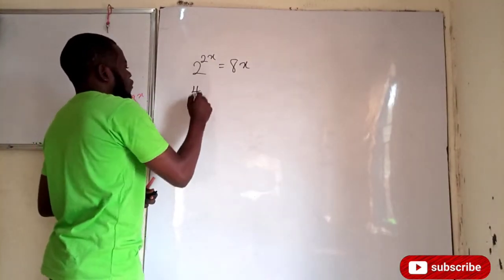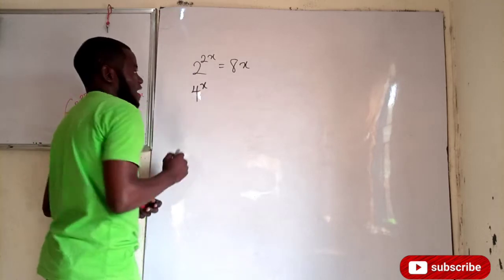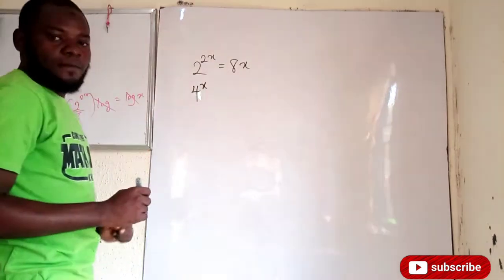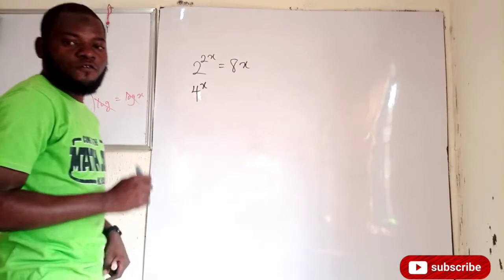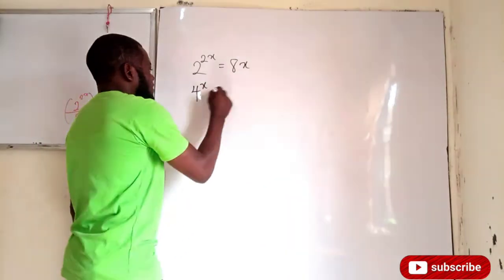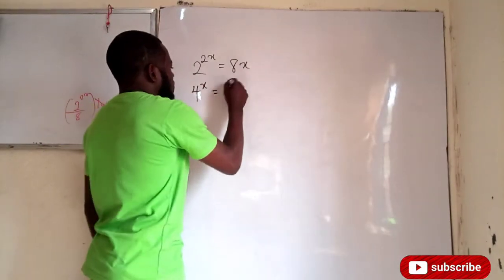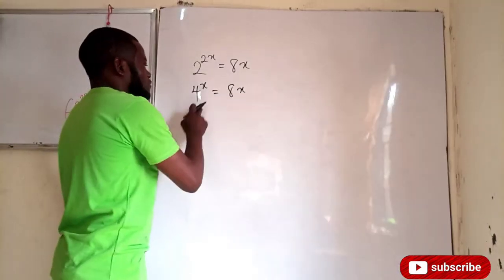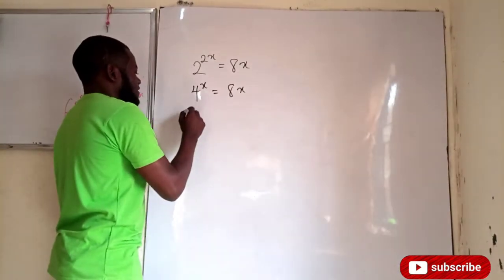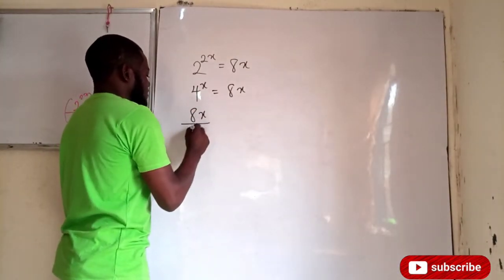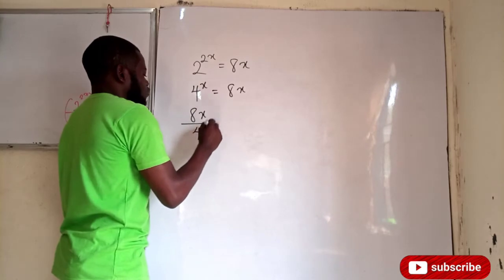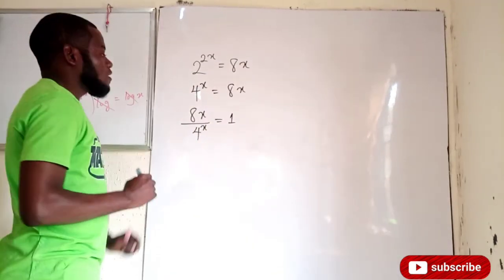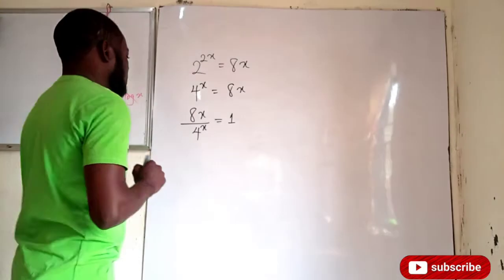What I would like to do is rewrite 2 to the power of 2x as 4 to the power of x, because 2 squared is 4. So 4 to the power of x equals 8x. If I divide both sides by 4 to the power of x, I will have 8x divided by 4 to the power of x equal to 1.